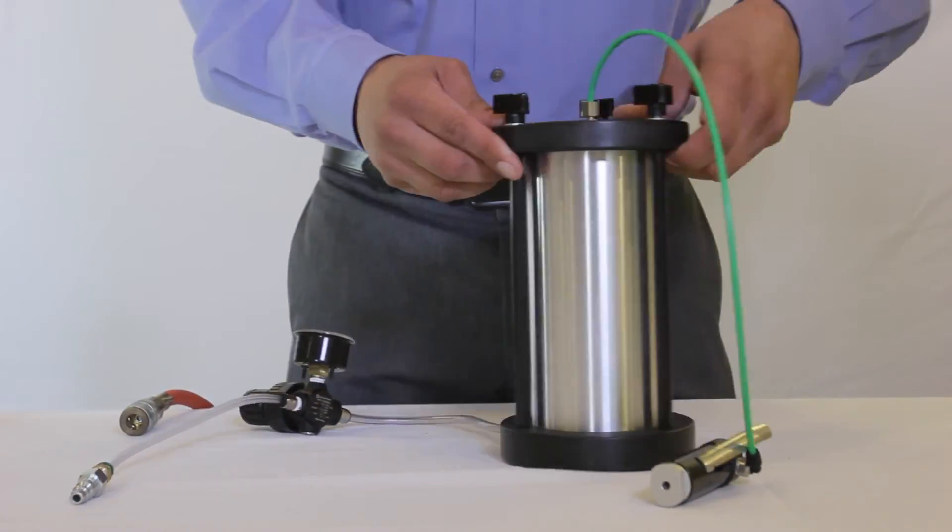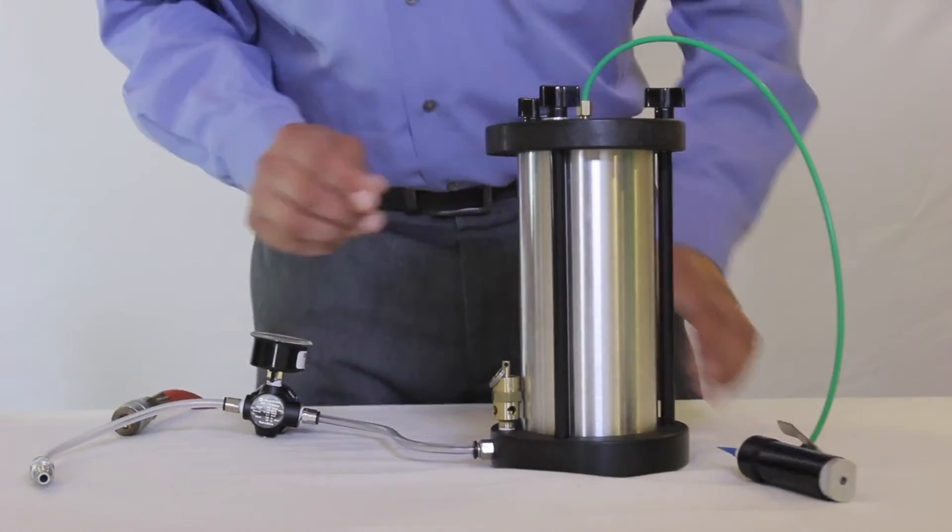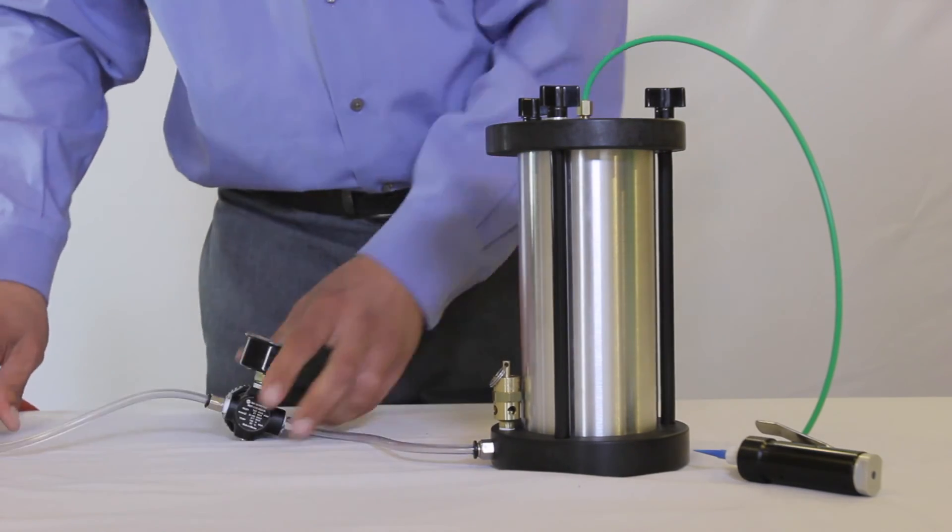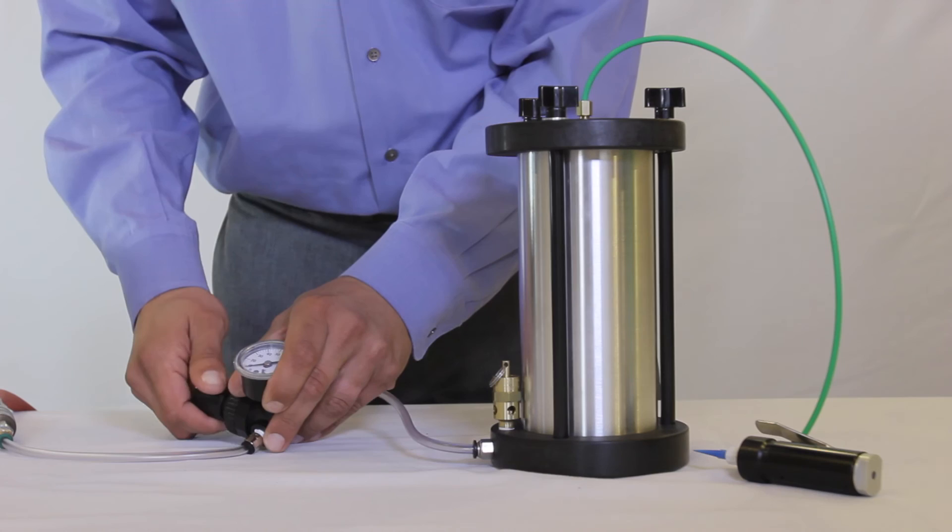Using your quarter inch clear air line, press fit the tubing into the bottom of the tank and to the external regulator and gauge. Then connect to your dry air source.